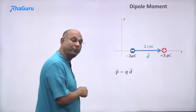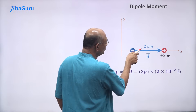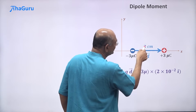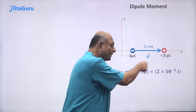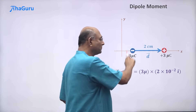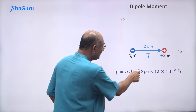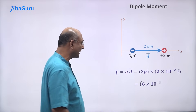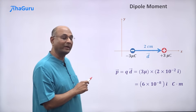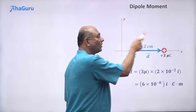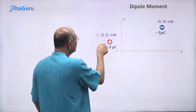So the dipole moment p equals 3 micro times 2 times 10 to the minus 2 î, giving us 6 times 10 to the minus 8 î coulomb meters. That is the dipole moment of this object.